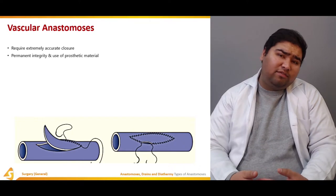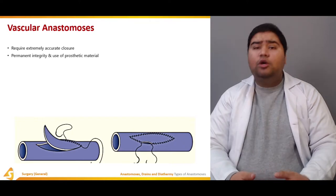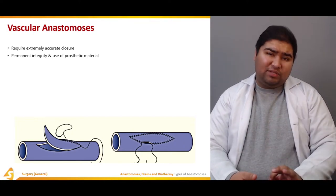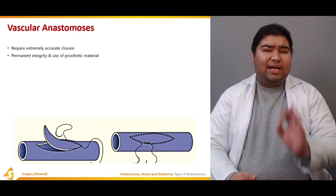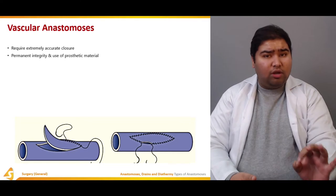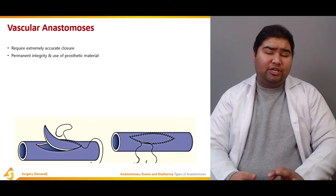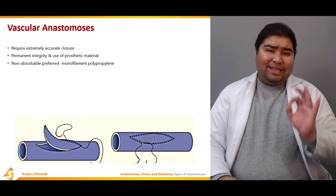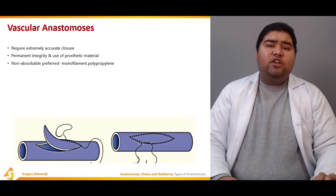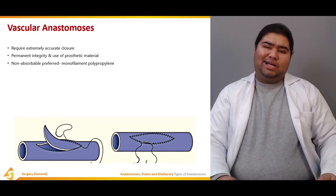Whatever prosthetic material you're using should be strong enough to withstand the systolic pressure in a human being. In the vessel, you normally prefer non-absorbable sutures. Why is that?